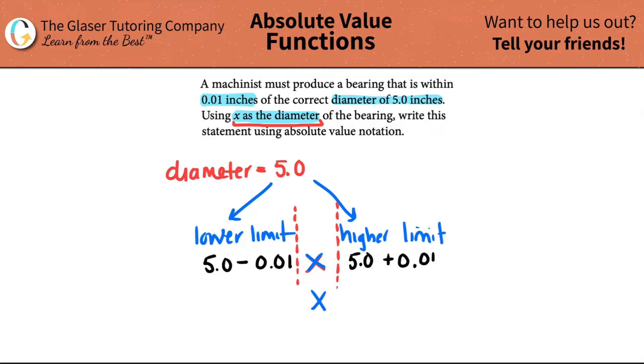Which is 5.0 plus 0.01, because you can't get any higher than the higher limit. And remember, the alligator of the greater than sign always chomps down on the bigger number.